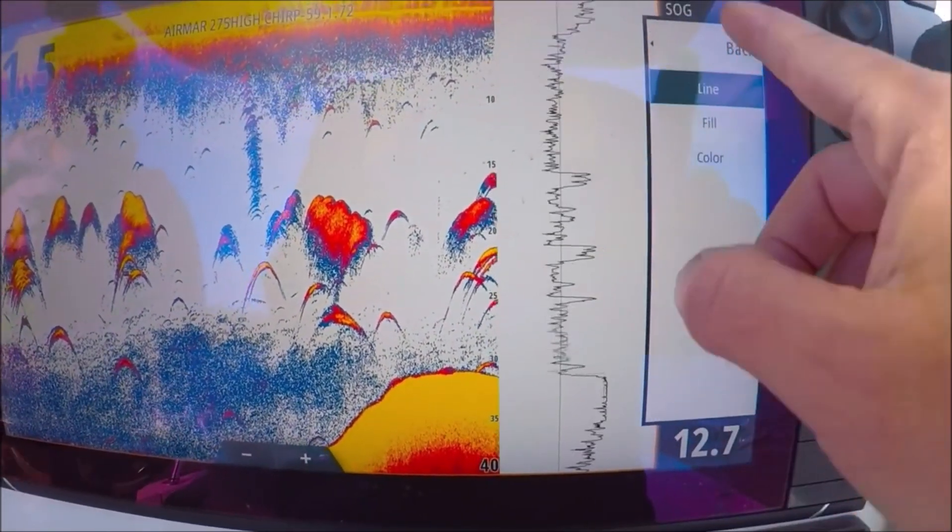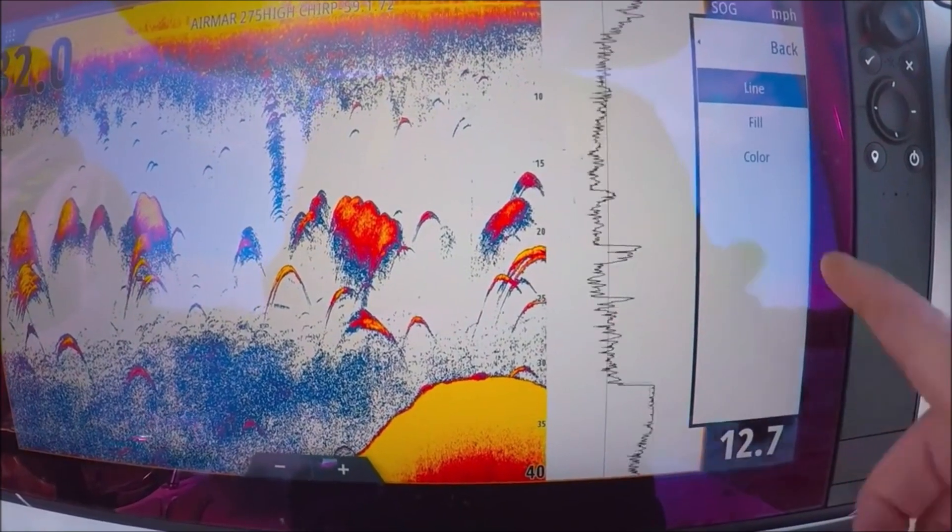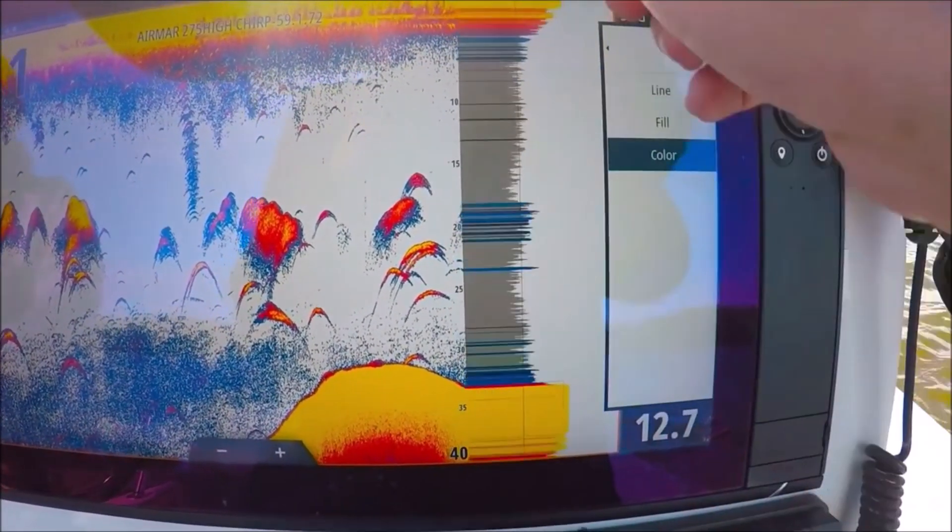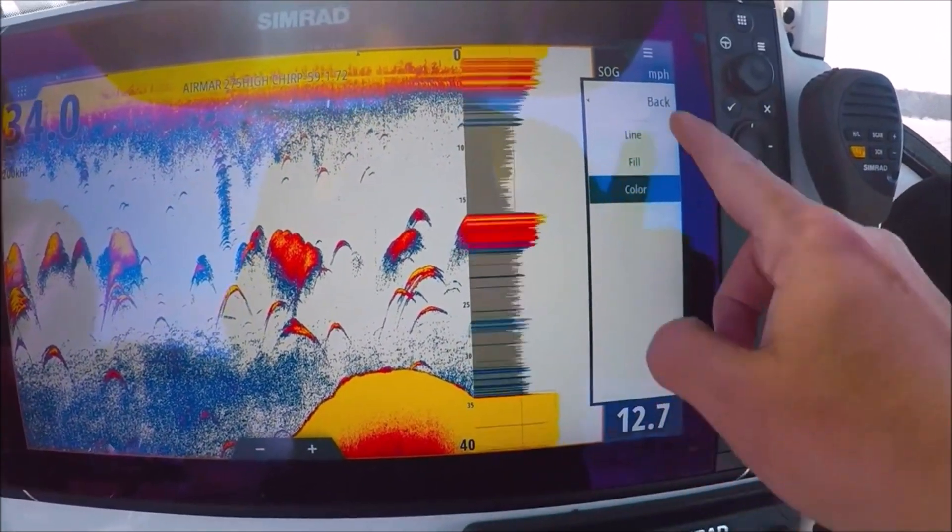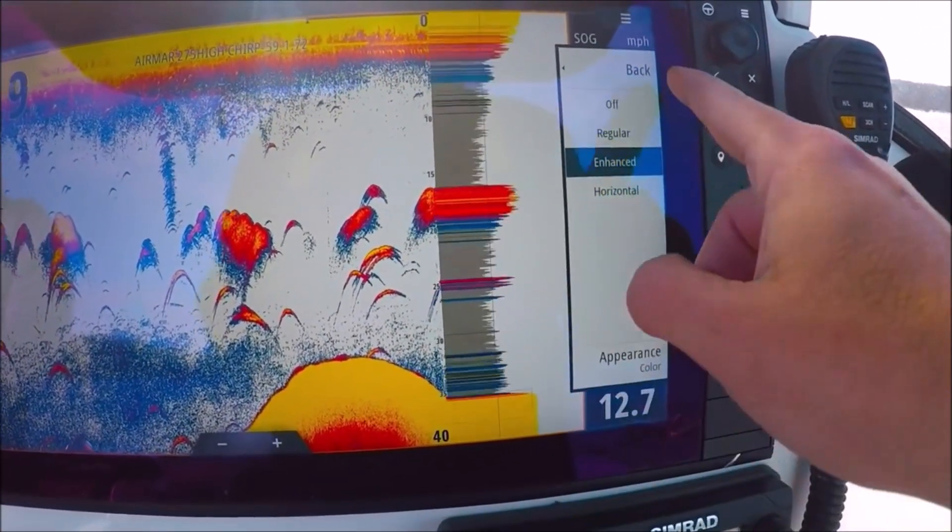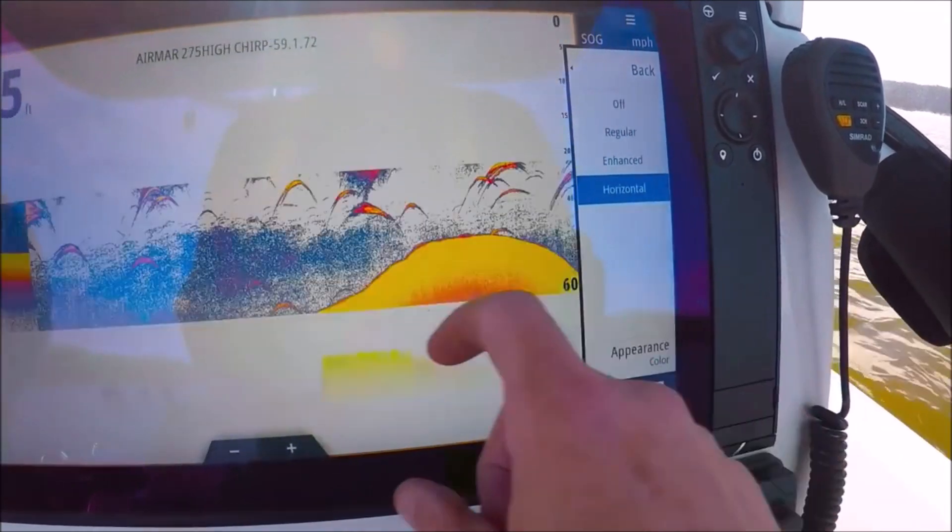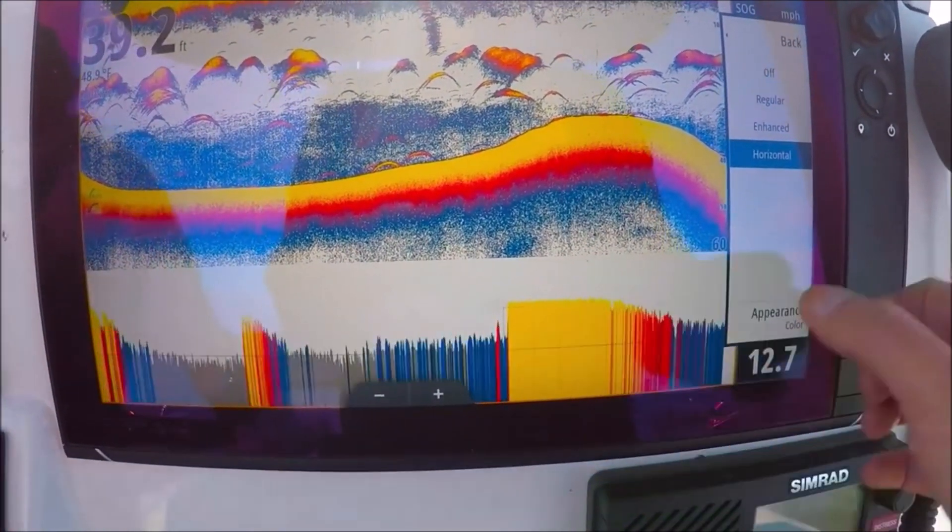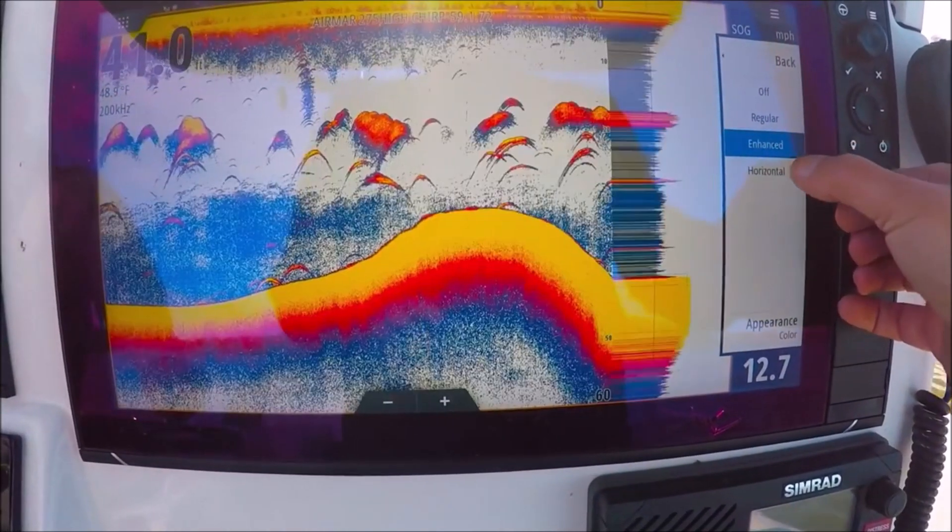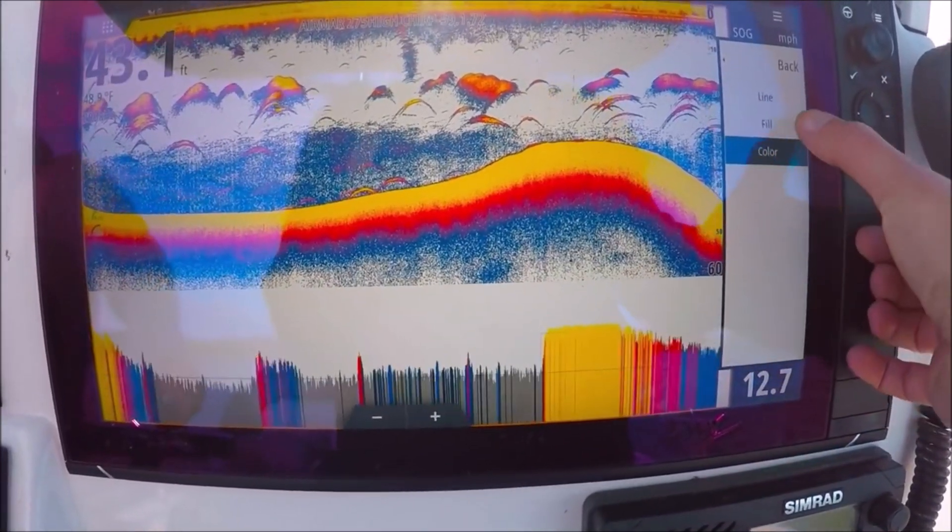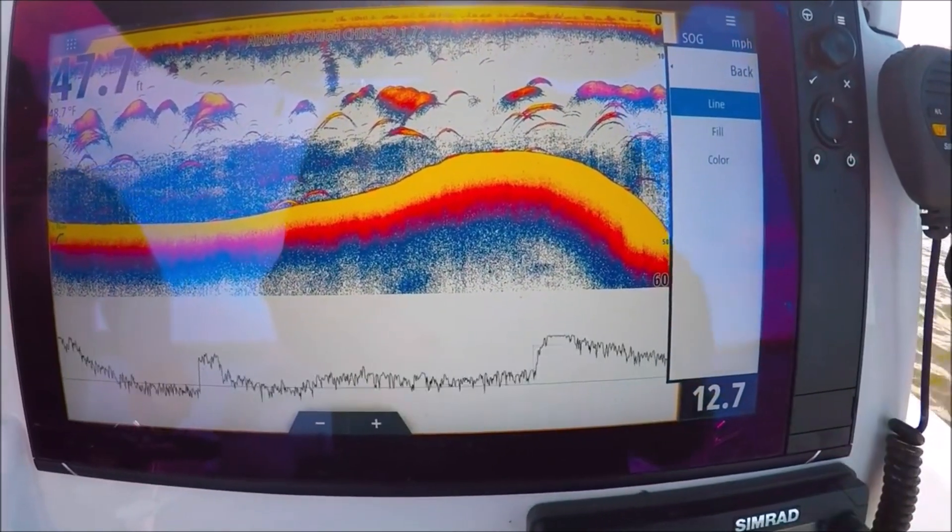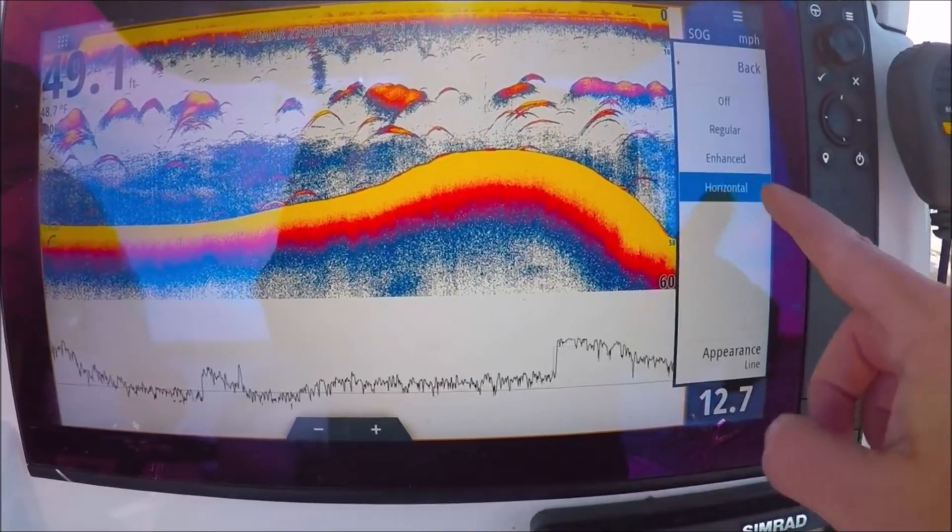We can go to line, which is just the outside line of the A-scope. Fill, which is solid gray. And color, which uses every color of the palette. This is my favorite here. We can also use a horizontal, which does the bottom of the screen. There's the full color. Here we can change the appearance just like we did before, fill and line.